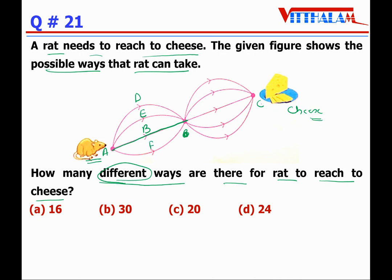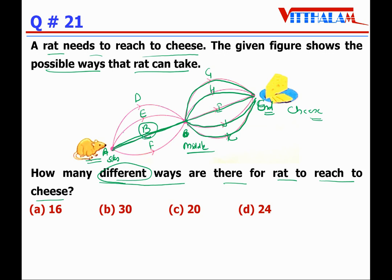If the rat takes route B to the middle, it has five options to reach the cheese: B-G, B-H, B-I, B-J, or B-K. Similarly, if it takes route D, it also gets five options: D-G, D-H, D-I, D-J, D-K. If it takes route E, again five options: E-G, E-H, E-I, E-J, E-K. And if it takes route F, it also gives five options.